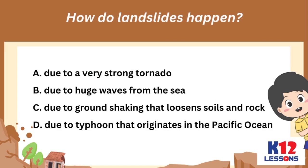How do landslides happen? A. Due to a very strong tornado, B. Due to huge waves from the sea, C. Due to ground shaking that loosens soils and rock, D. Due to a typhoon that originates in the Pacific Ocean.